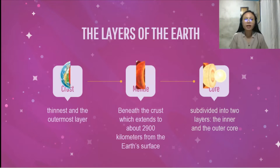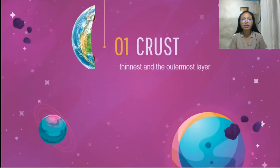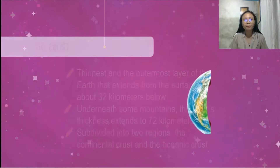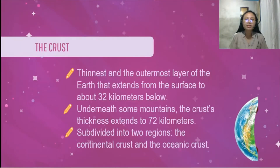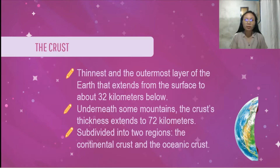The crust is the thinnest and outermost layer of the earth. The mantle is beneath the crust which extends to about 2,900 kilometers from the earth's surface. The core is subdivided into two layers, the inner and the outer core. The crust extends from the surface to about 32 kilometers below, and underneath some mountains, the crust thickness extends to 72 kilometers. So this means that the crust varies in thickness across the earth.